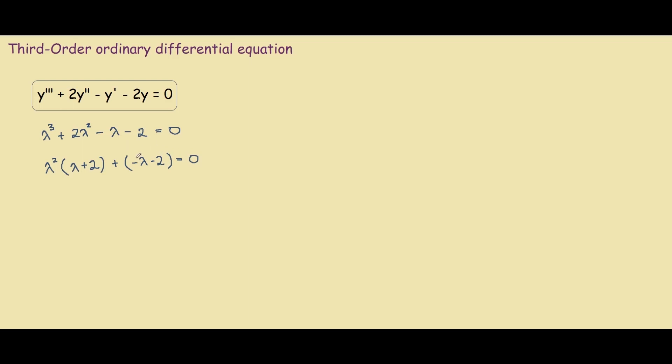So now my goal is to try and make this section over here equal to this section over here so I can factor it out. How I'll do that is by doing lambda squared, lambda plus 2 minus. So you bring the minus out, it becomes lambda plus 2.